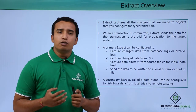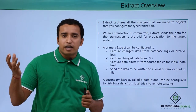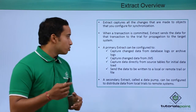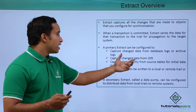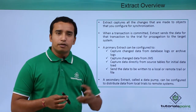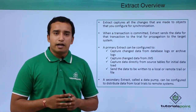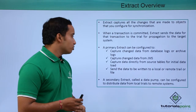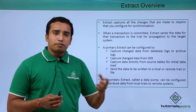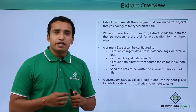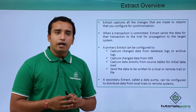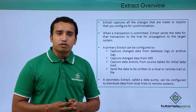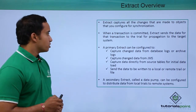What do we mean by initial load? Initial load is nothing but bringing your target database in sync with your source database. In that case, your extract can directly read the data from the source tables and put it into the target database. You can also write the data to the trail files — extract captures the data, puts it into the trail file, and that same trail file is read by your secondary extract process known as the data pump process.